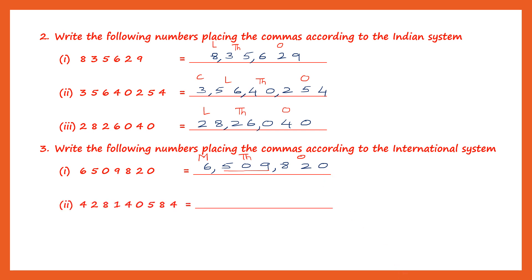This is the next one — a big number. Let's write it down: four, two, eight, one, four, zero, five, eight, four. The places in the international system are ones, tens, hundreds, thousands, ten thousands, hundred thousands, million, ten million, hundred million. Let's place our commas: ones, tens, hundreds — comma; thousands, ten thousands, hundred thousands — comma. The ones period, the thousands period, and the millions period. So let's read it: four hundred and twenty-eight million, one hundred and forty thousand, five hundred and eighty-four.